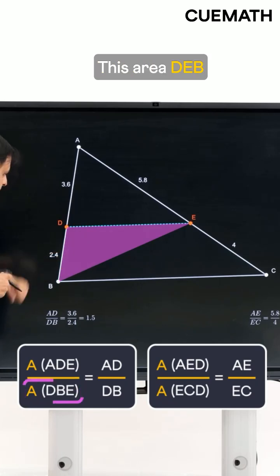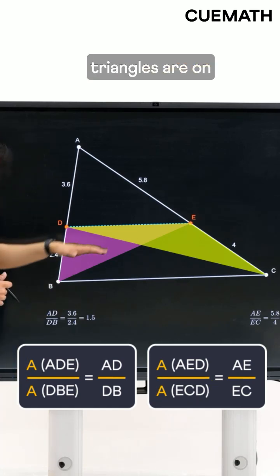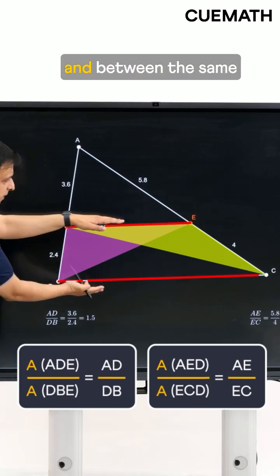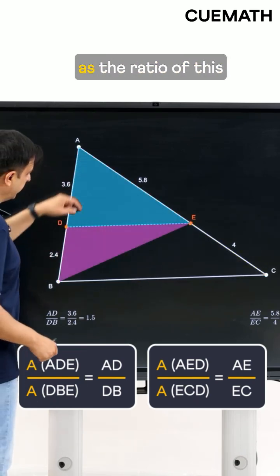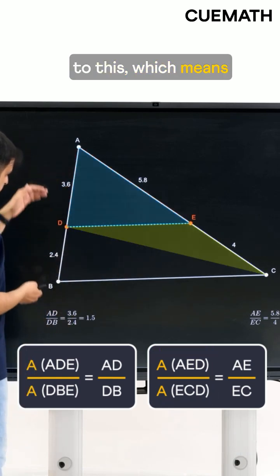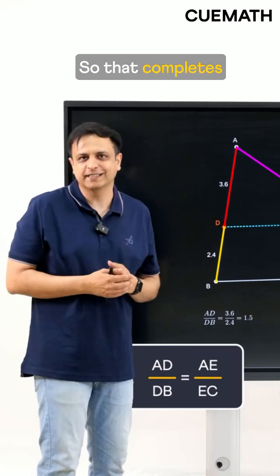This area DEB is the same as this area DEC because these two triangles are on the same base and between the same parallels. So the ratio of this to this is the same as the ratio of this to this, which means that AD over DB is equal to AE over EC. So that completes our proof.